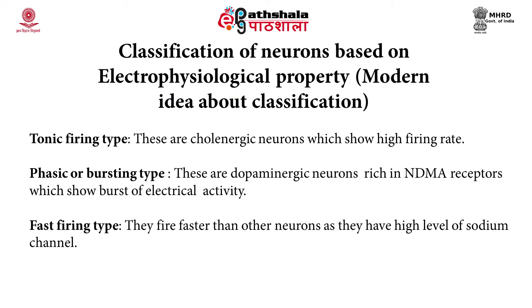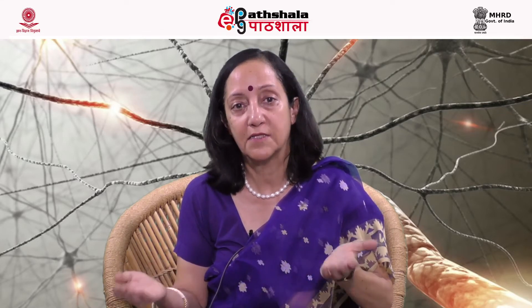Another classification is based on electrophysiology, in which we have different kinds of neurons — some that fire tonically or in a biphasic manner. Based on their different firing rates, neurons have been classified into three types. The next important cell in the nervous system is the glial cell.